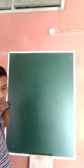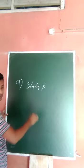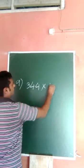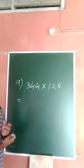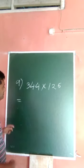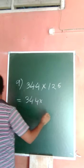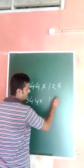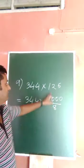So next one is 344 into 125. So 344 into 125: 125 you can write, it should be 1000 divided by 8. Okay. This one is 1000 divided by 8. Whenever you divide it, 1000 by 8, you will get 125. Eight, eight, eight, two, 20.